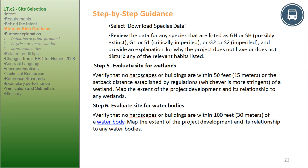Step 5: Evaluate site for wetlands — verify that no hardscapes or buildings are within 50 feet (15 meters), or the setback distance established by regulations, whichever is more stringent, of a wetland. Map the extent of the project development and its relationship to any wetlands. Step 6: Evaluate site for water bodies — verify that no hardscapes or buildings are within 100 feet (30 meters) of a water body. Map the extent of the project development and its relationship to any water bodies.